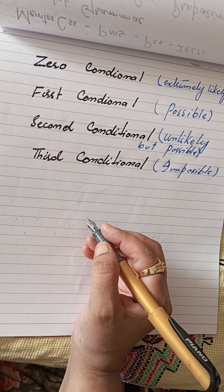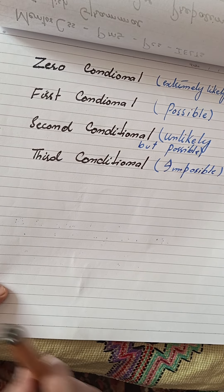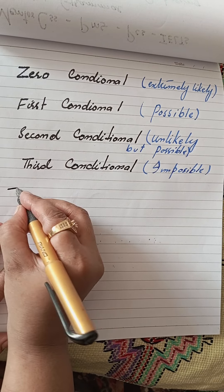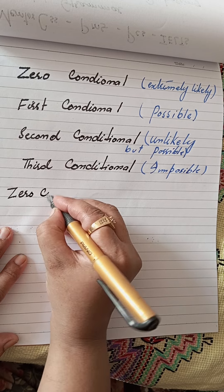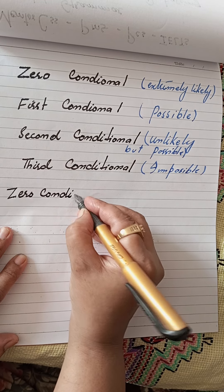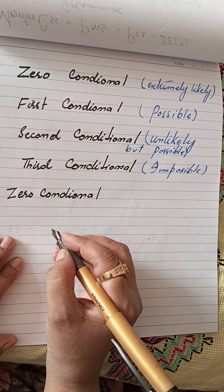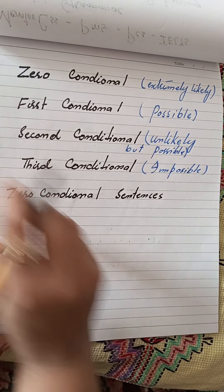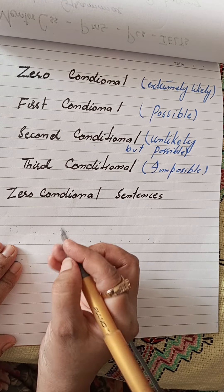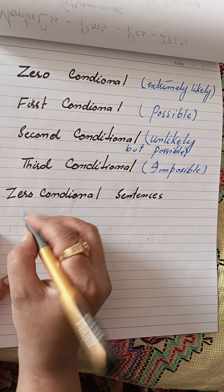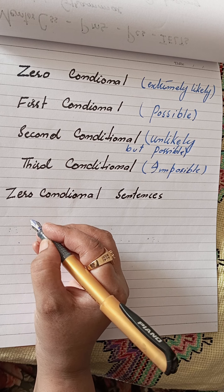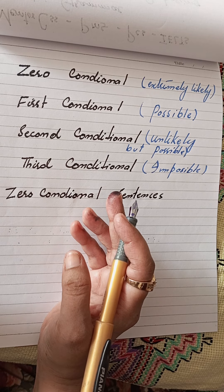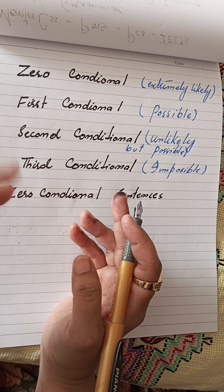Okay, so here I am going to start the zero conditional. Zero conditional sentences — here I am writing the definition. Zero conditional basically describes an outcome at a certain level. Zero conditional is also known as the type of zero, which outlines situations in which one thing always causes another.